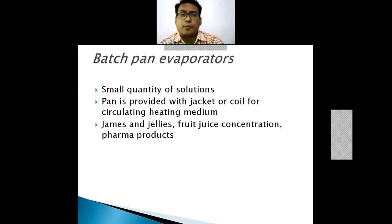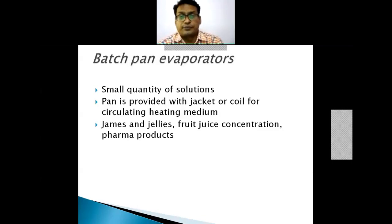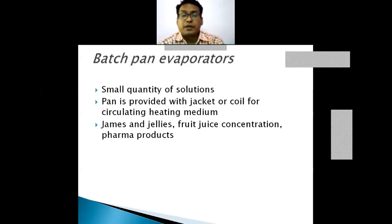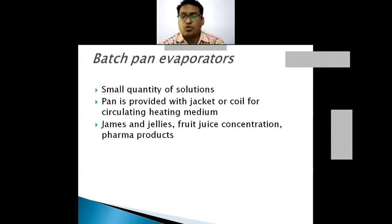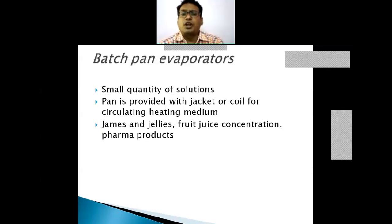Next are batch pan evaporators. When a small quantity of solution needs to be concentrated, we use batch pan evaporators. These pans are small vessels provided with a jacket or coils for heating. Applications include simple jams and jellies, fruit juice concentrations, and pharmaceutical products in smaller quantities. If production capacities are high, people generally move to continuous production processes.